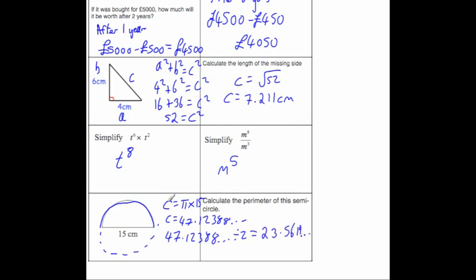Again, it's best not to round until the very end. I know this distance from here all the way around to here is equal to 23.5619 and so on, but we need to add on the 15 because it's the perimeter of the semicircle the whole way around.